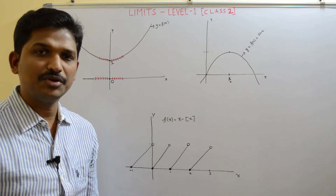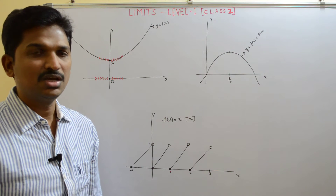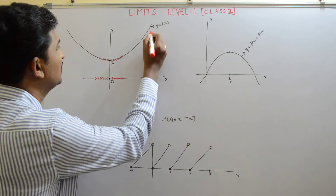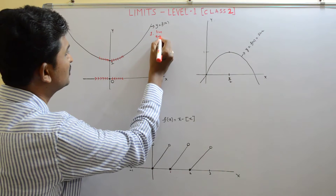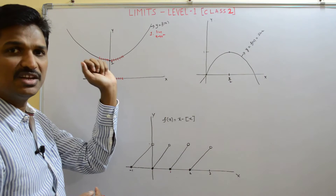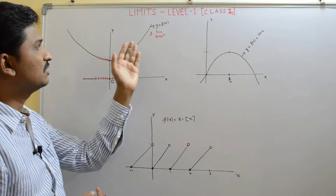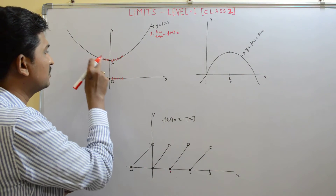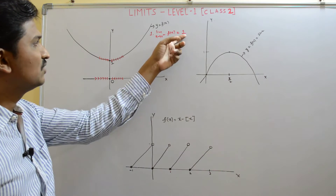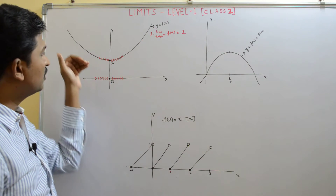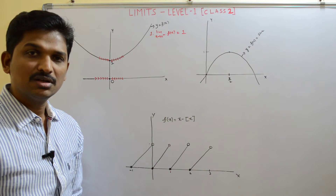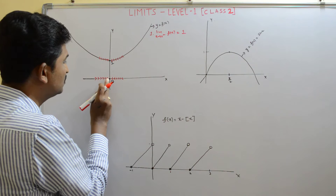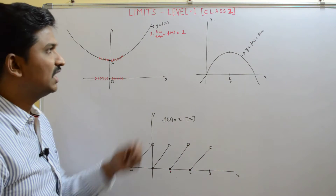Now we will discuss what is the left hand limit and right hand limit of a function. As x approaches to 0 from the left, it is denoted as: limit x approaches to 0 minus f of x. x approaching 0 minus means all x values are less than 0 and very close to 0. f of x approaches to 1. So the limiting position of the function when x approaches to 0 from the left is 1 — meaning the left hand limit is 1.